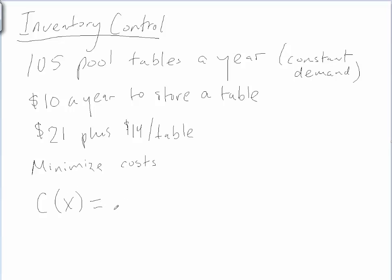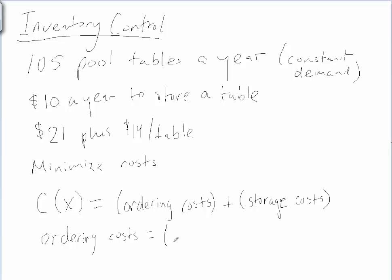So our costs are going to be a combination of things. It's going to be ordering costs plus storage costs. So we place orders, that costs some money, and we store tables and that's going to cost some money. And I'm going to multiply that by the number of orders.